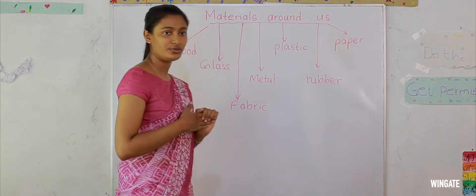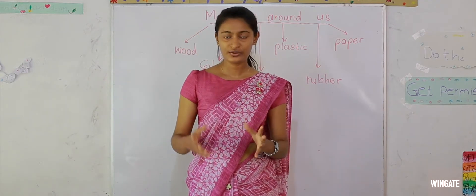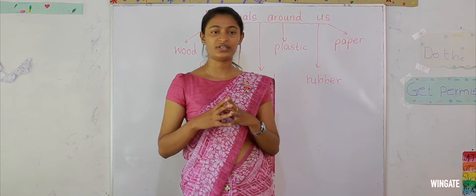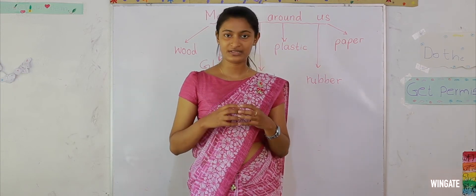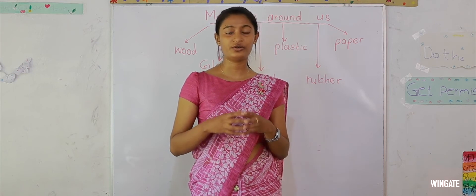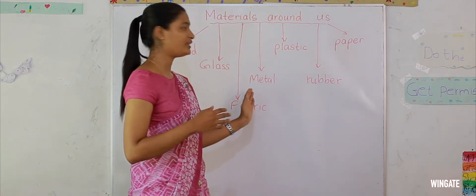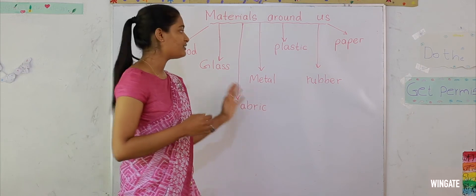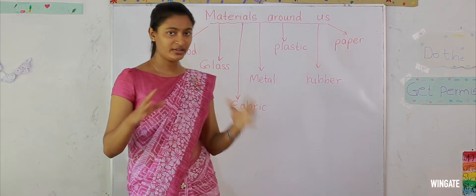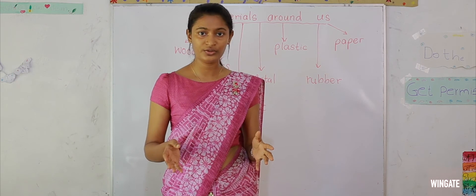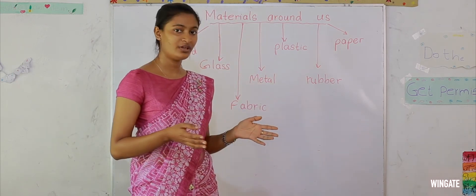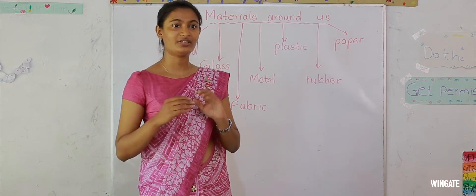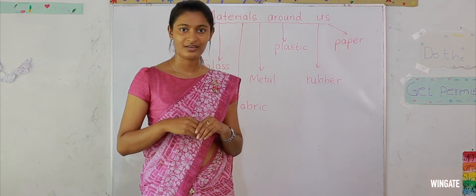Those are the materials used to make the day-to-day objects that we use in our life. So from the next part of this lesson we are going to discuss the properties of each of these materials. Study this lesson. Check the objects around you and try to find which material they are made of. And then get ready for the next part of this lesson. Thank you.